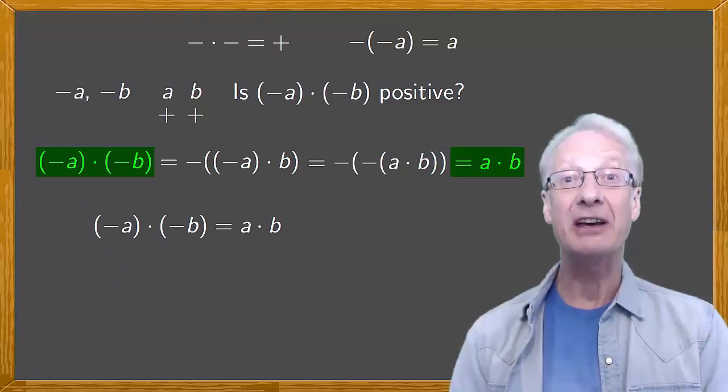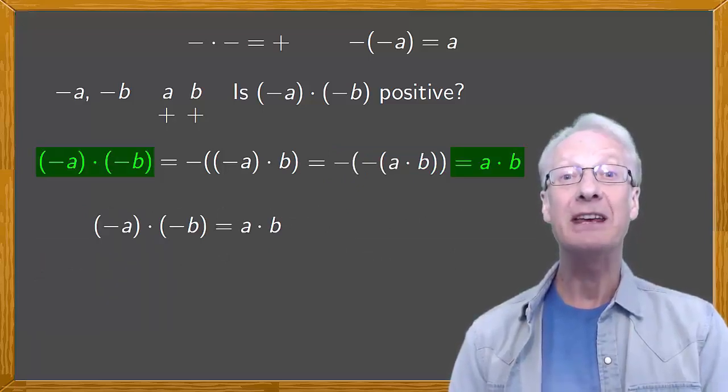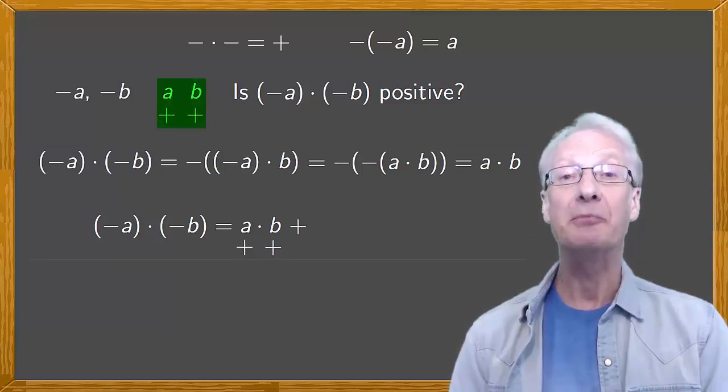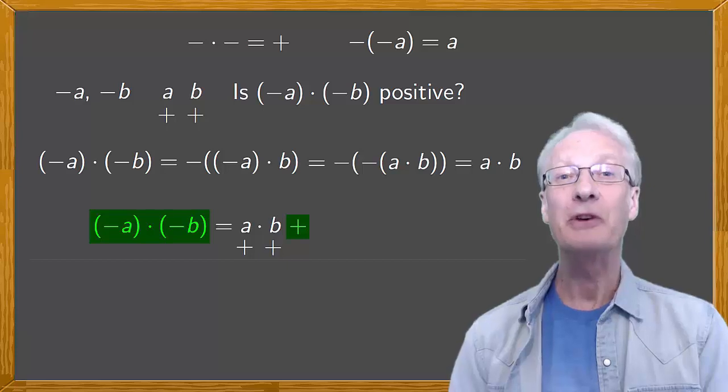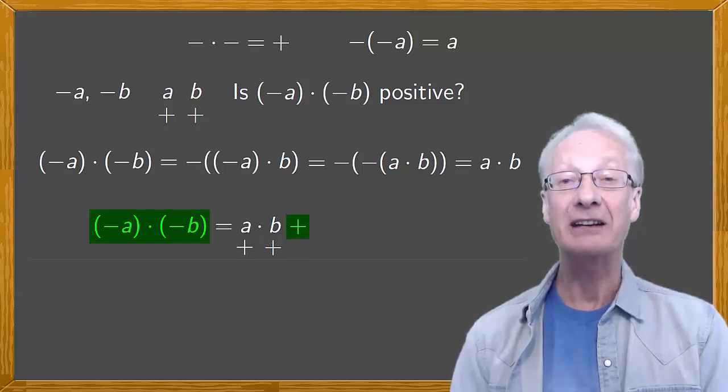So, negative a times negative b is a times b. And this has to be positive, because both a and b are positive. So, there we have it. We have shown that a negative times a negative is positive.